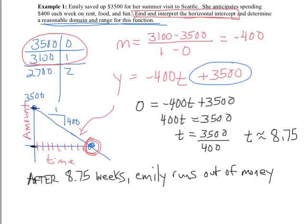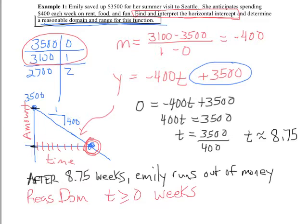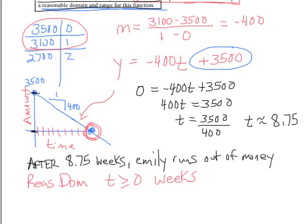The second part of the problem says find a reasonable domain and range. So our domain is input. So a reasonable input would be our number of weeks. So after 0 weeks, 1 week, 2 weeks. So reasonable domain we can say is that time is greater than or equal to 0 weeks. We could keep going on forever but kind of when it makes sense to go out endlessly. When we want to find a reasonable range then what we're talking about is her money and a reasonable range, well she starts out at $3,500 and so the total amount of money she has is going to be less than or equal to $3,500.